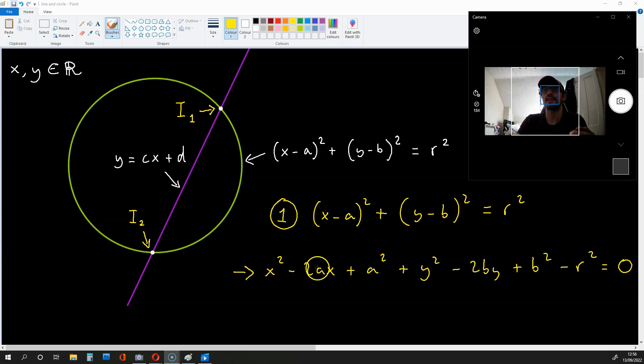So if we expand this, what we get is this just below: x² - 2ax + a² + y² - 2by + b² - r² = 0. Now, since this has been expanded, it's going to be easier for us to plug this value of y into this equation and then isolate x.